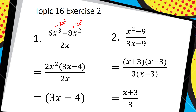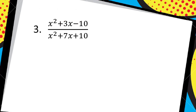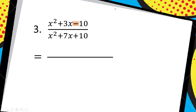Copy down number 3 and then we'll start. Looking at my numerator for number 3 — is there a highest common factor? No. There are no x's in all terms and there's no highest common factor that goes into 1, 3, and 10. So no highest common factor. Is it DOTS? No — it can't be DOTS because there are three terms, so it must be a trinomial. With a trinomial I always read from the back. I look at my last sign, which is negative, so I know my brackets will have one plus and one minus.